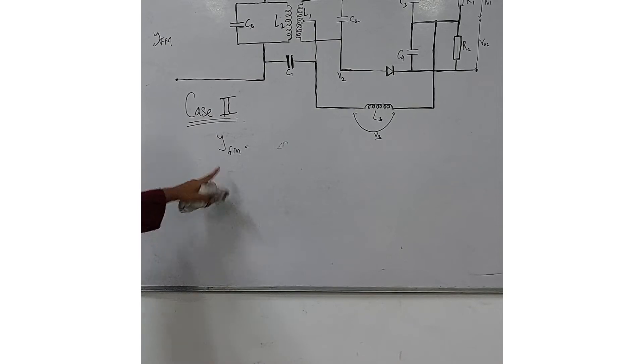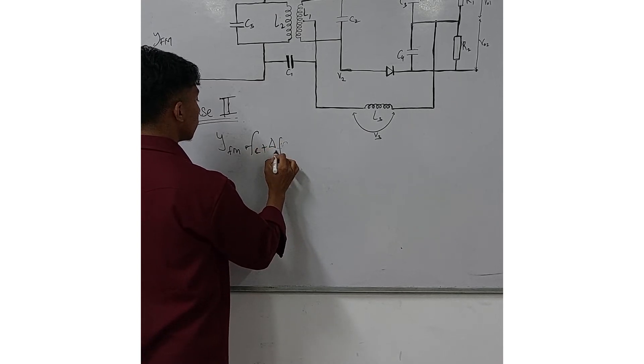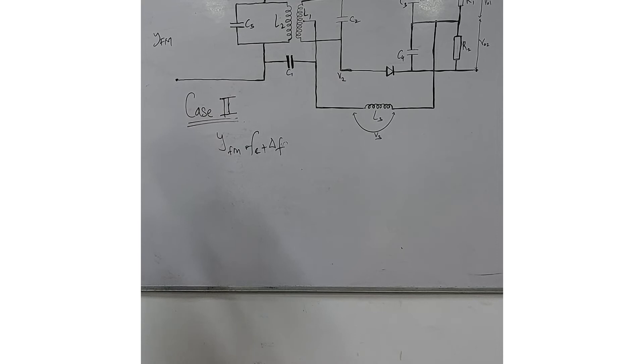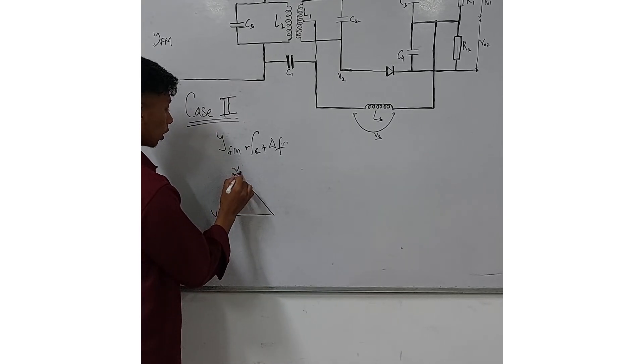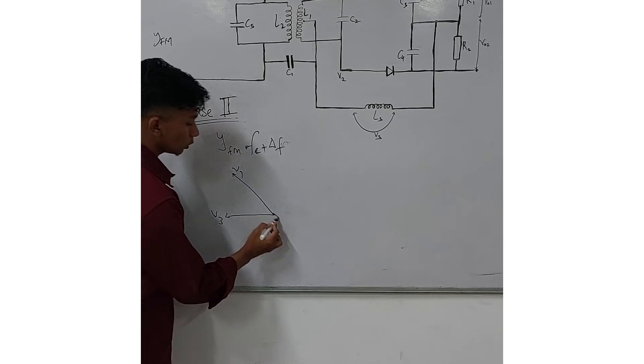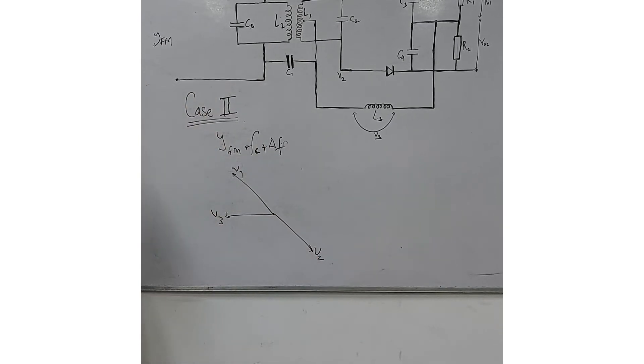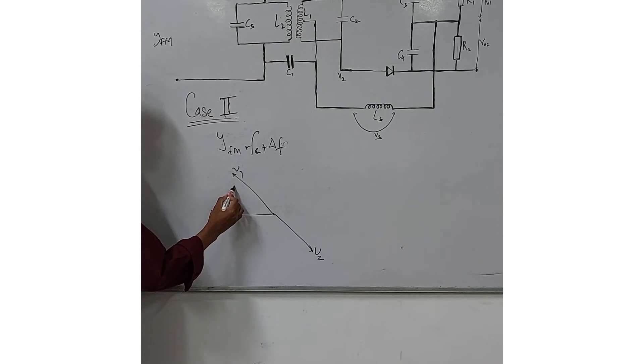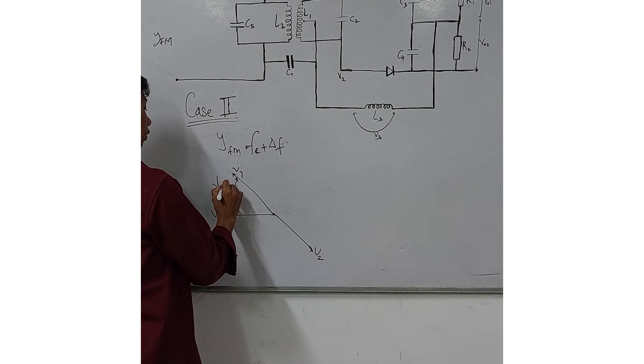Now suppose the input frequency is off resonance, that is fc equals fc plus delta f. We can see that the phase between V3 and V1 decreases. However, the phase between V3 and V2 increases. To draw the phasor of the right arm, we take the resultant of V3 and V1 to obtain VA1.